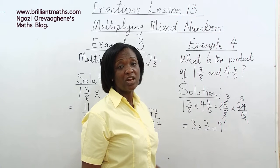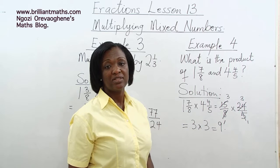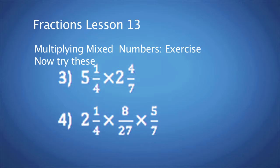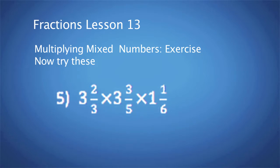Having done all of this, I want you to try out these exercises. Number 1: 1 3 quarters times 5 over 8. Question 2: 5 over 9 times 2 2 thirds. Question 3: 5 1 quarter times 2 4 sevenths. Question 4: 2 1 quarter times 8 over 27 times 5 over 7. Question 5: 3 2 thirds times 3 3 fifths times 1 1 sixth.